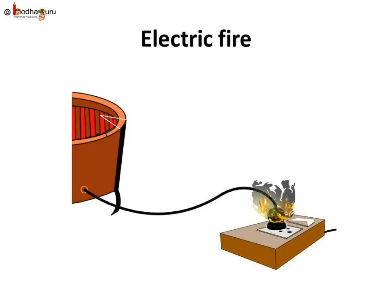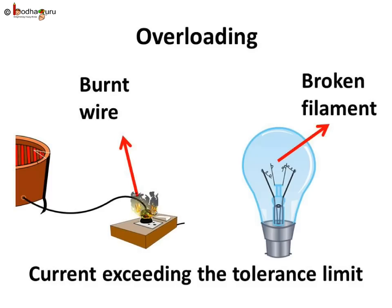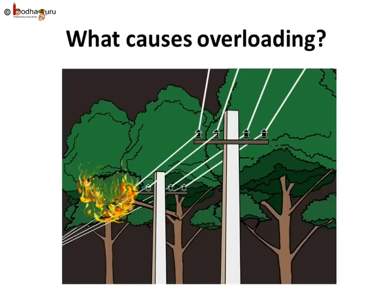But at times, we keep hearing about burnt wires and electric fires. This is because the heat tolerance of a circuit cannot be unlimited. When the current flowing through a circuit exceeds its tolerance limit — that is, the current is greater than what a circuit is designed to carry — it is called overloading of the circuit. This can make the circuit extremely hot, causing hazards like melting or burning of wires, and can even damage elements of the circuit like the bulb, TV, etc. But why did the current through the circuit increase suddenly and undesirably, causing damage to the bulb?